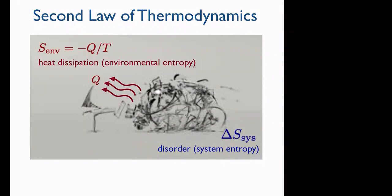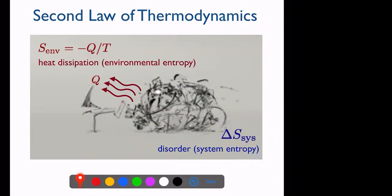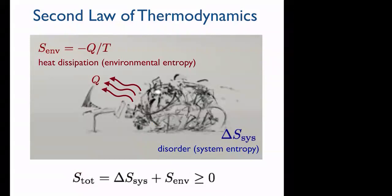We can decompose entropy production into two terms: the entropy of the system, related to disorder, and the entropy of the environment, related to heat dissipation. Typically, physical processes lead to increased disorder in the system and dissipation of heat into the environment. The total entropy — system plus environment — always increases or equals zero in equilibrium. We can make a system more ordered by reducing its entropy, but we pay a price by increasing the environmental entropy, i.e., dissipating heat.